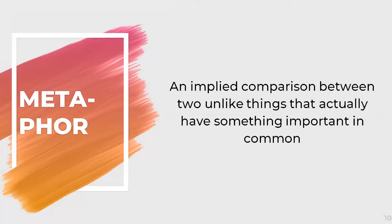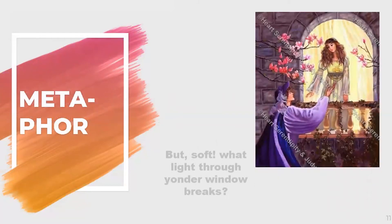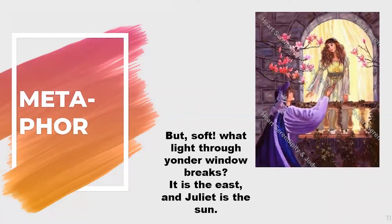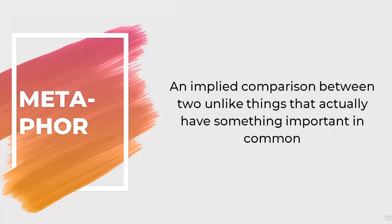Next we have metaphor. A metaphor is an implied comparison between two unlike things that actually have something important in common. As a literary device, a metaphor creates implicit comparisons without the express use of 'like' or 'as.' So how is it different from simile?